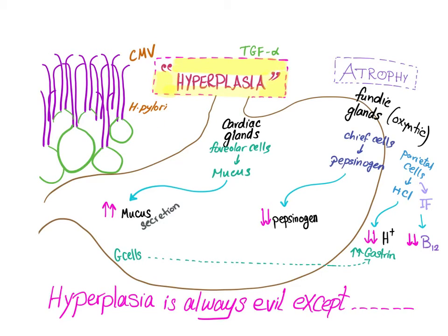The problem in Ménétrier's disease is hyperplasia of these glands — foveal hyperplasia. When these glands undergo hyperplasia, they will lead to increased mucus secretion. This mucus is protein, by the way. This is important.